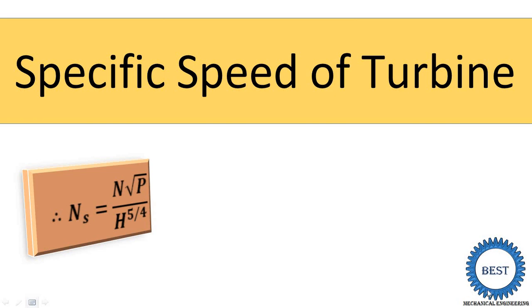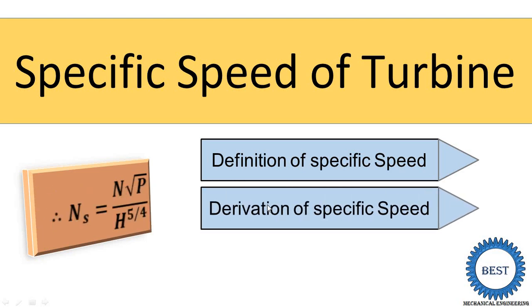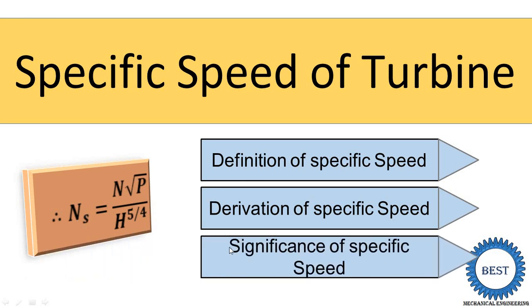Welcome to this mechanical engineering YouTube channel. In this video, I will teach you the specific speed of a turbine. First, I cover the definition of specific speed and explain how specific speed is different from the RPM of a turbine. Second, we derive the equation: Ns = N√P / H^(5/4). Finally, we learn the significance of specific speed.